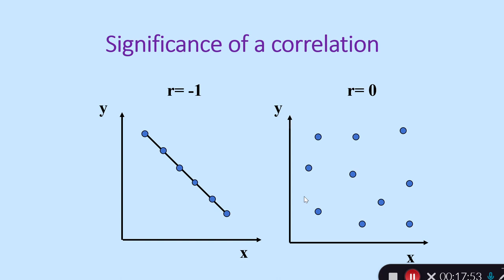The probability associated with the correlation coefficient is testing the hypothesis that the correlation is different from zero — that there is no relationship. We've got r equals negative one and r equals zero on this slide. We're doing a test to see whether our straight line is significantly different from the completely horizontal line we'd fit to the r equals zero scatter, which would sit about the middle of that distribution of points.